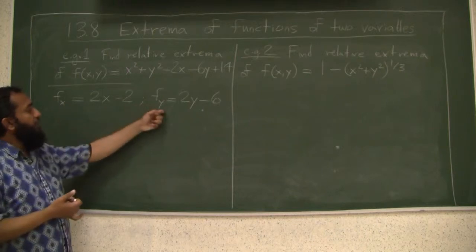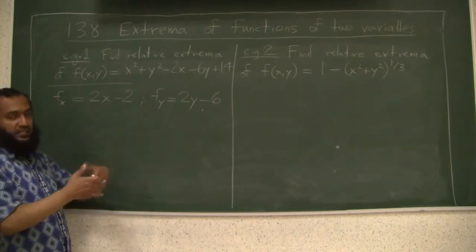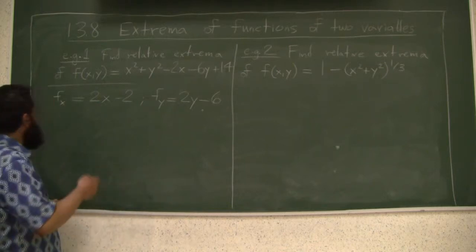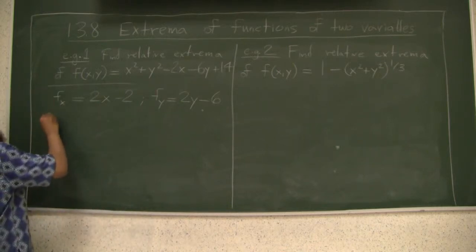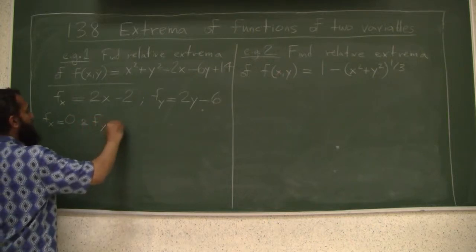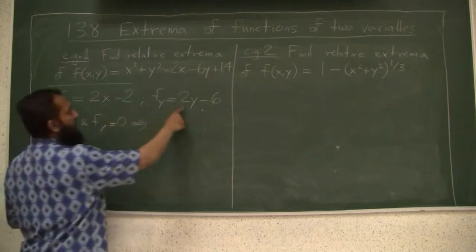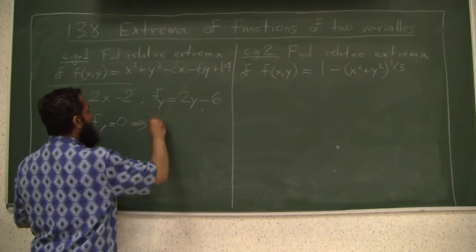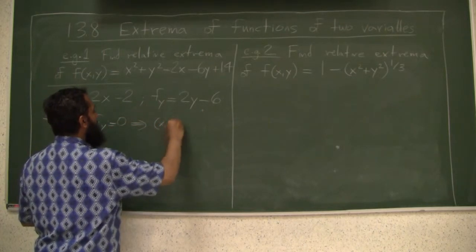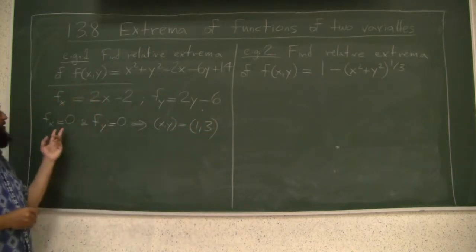The partials here are polynomials because this is a polynomial. These are polynomials, so they exist at every point. So if you want fx equals 0 and fy equals 0, you will find out that x is equal to 1, y equal to 3 here. You get only the point xy equal to 1, 3. That's the only point that comes out from here.